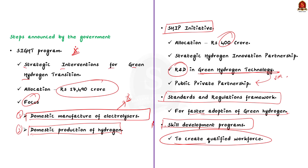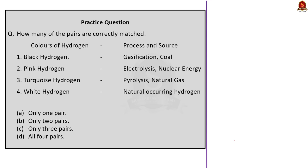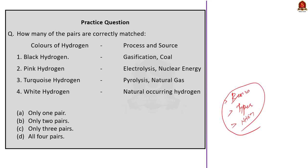In our discussion, we saw the basics of hydrogen fuel, the types of hydrogen based on mode of production, and finally the flagship scheme of the government — the National Green Hydrogen Mission. With these learned points, let us take up the next article for our discussion.